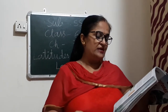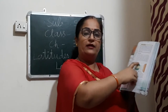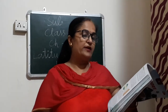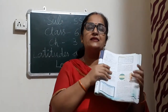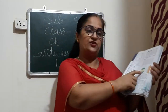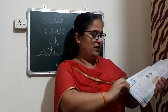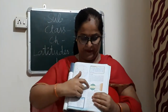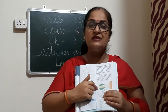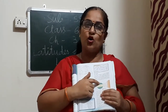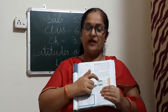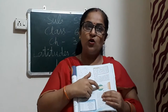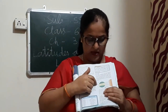Now, important latitudes. We can understand this from this picture. This one is the equator, which is on 0 degrees. Upside is the northern hemisphere from the equator, and downside is the southern hemisphere. Upside, this yellow area you can see.